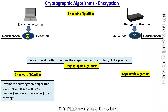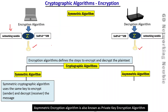In the symmetric algorithm, they use the same key to both encrypt and decrypt the message. For example, to encrypt the message at the transmitting end as well as to decrypt it at the destination, we use the same key. This is the symmetric algorithm, and it is also known as private key encryption.